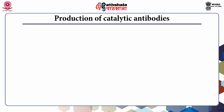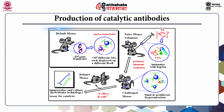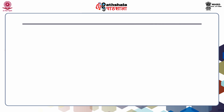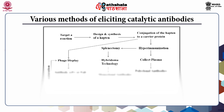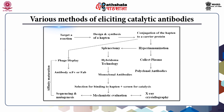Currently, three methods are primarily used for eliciting catalytic antibodies: polyclonal antibodies, monoclonal antibodies, and antibody fragment-based methods. The slide displays a summary of the various methods of eliciting catalytic antibodies discussed in this lecture.